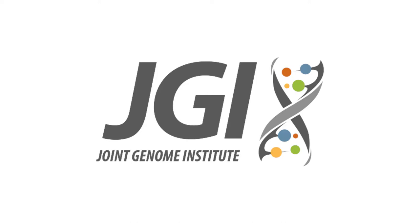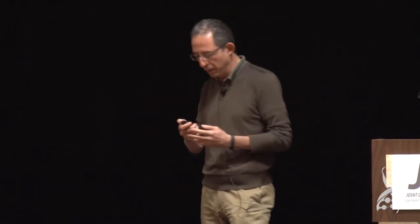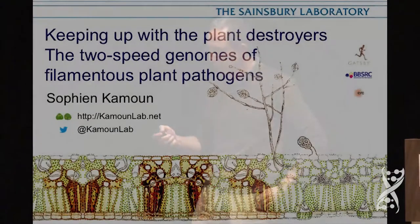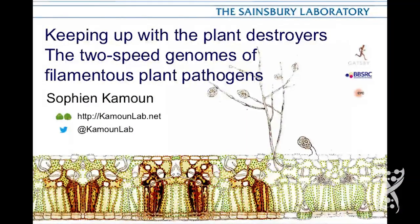Thanks to the organizers for having me come here. I was here about 10 years ago, a little over 10 years ago, for the collaboration that Dan mentioned — the first jamboree of an oomycete pathogen, the Phytophthora sojae and the Phytophthora ramorum projects, which were funded and sequenced by the JGI at the time. Tremendous impact on our community. I'll tell you about these pathogens, but first I'll start with a general slide.